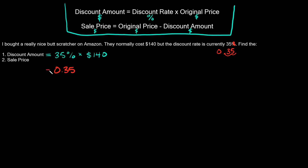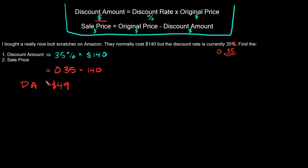The discount amount equals 0.35 times 140. Plugging this into the calculator gives us 49. Since the units for the discount amount are in dollars, the discount amount equals $49.